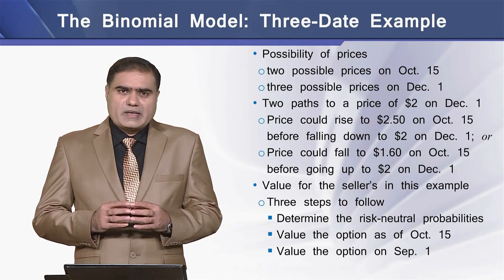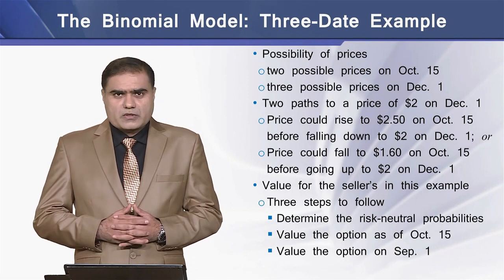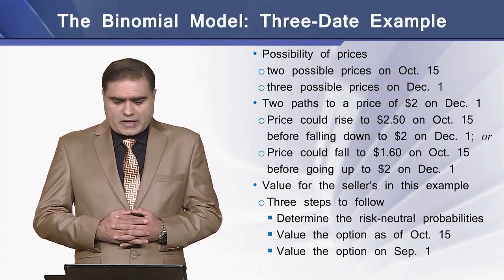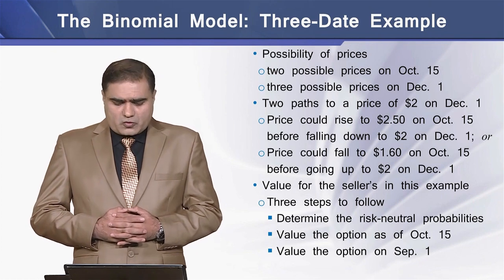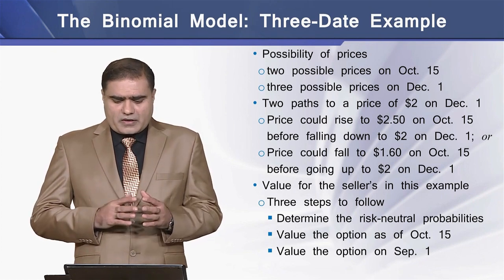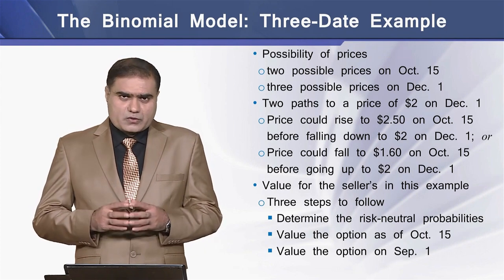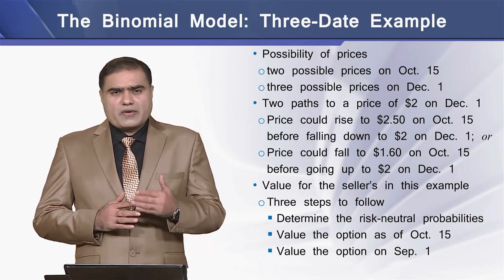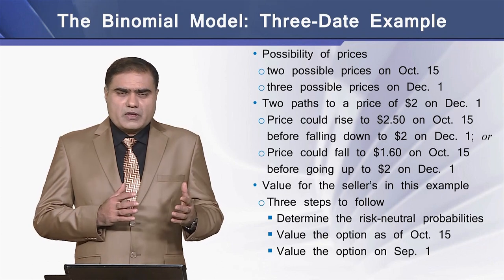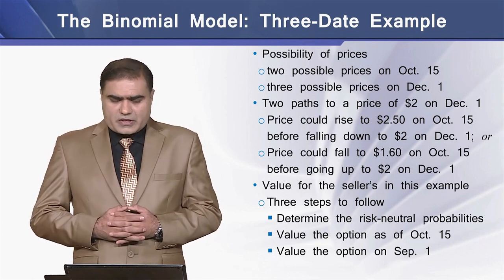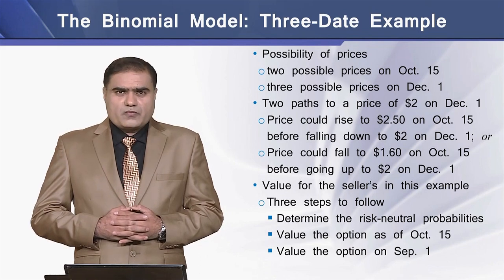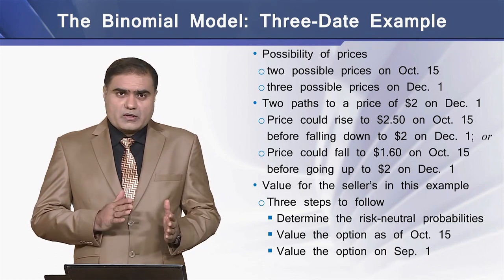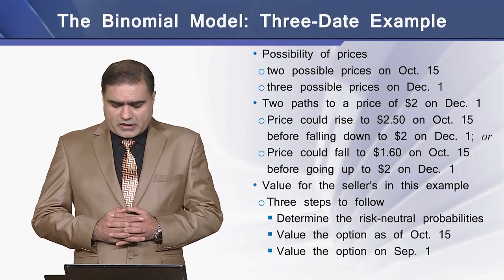There are two types of price possibilities: two possible prices on October 15, and three possible prices on December 1. There are two paths to reach a price of $2 on December 1. The first path is that the price could rise to $2.50 on October 15 before falling to $2 on December 1. The second path is that the price could fall to $1.60 on October 15 before going up to $2 on December 1.